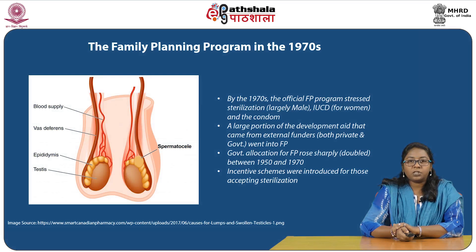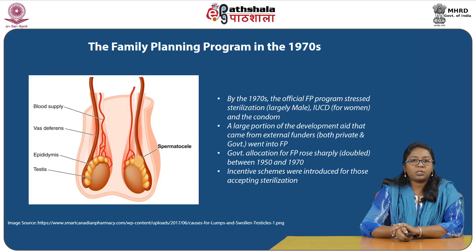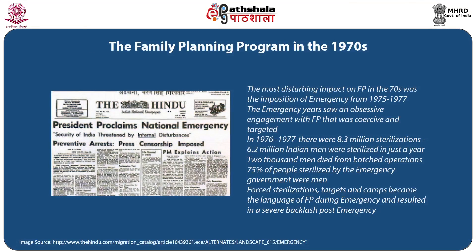By the 1970s, the official family planning program stressed sterilization, largely male sterilization, intrauterine contraceptive device for women, and the use of condom. A large portion of the development aid that came from external funders, both private and government, went into the family planning program. Government allocation for family planning rose sharply, almost doubling between 1950 and 1970. Incentive schemes were introduced for those accepting sterilization. The most disturbing impact on family planning in the 1970s was the imposition of emergency between the years 1975 and 1977.